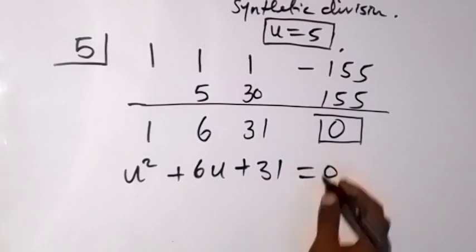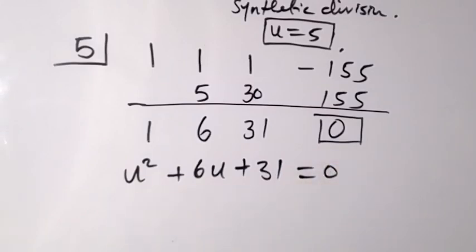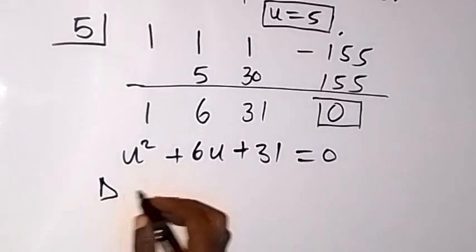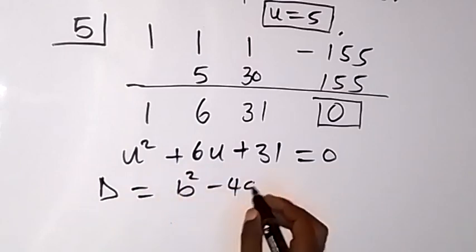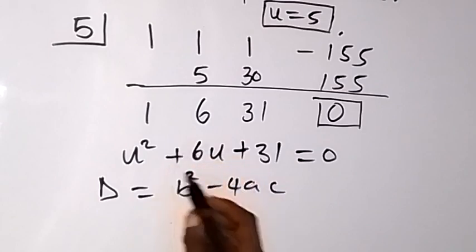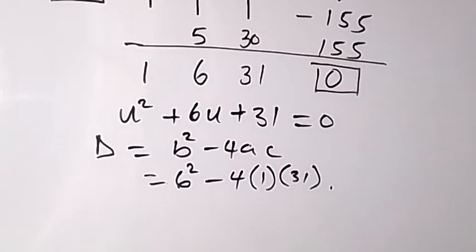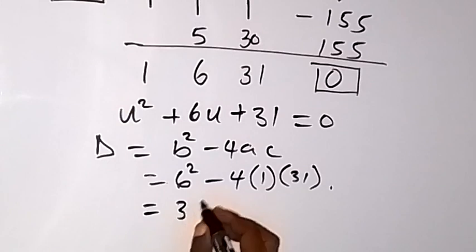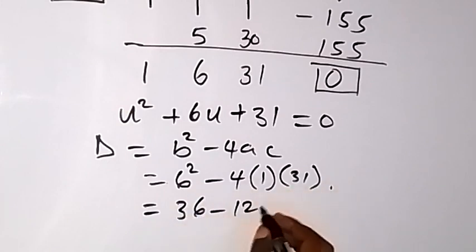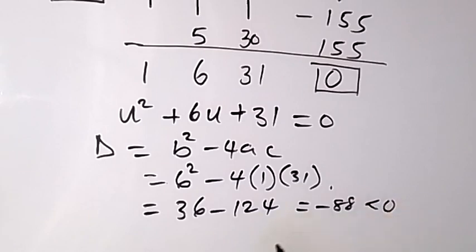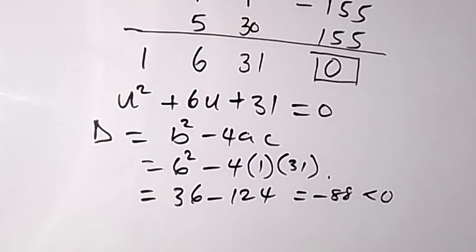Let's check whether we have a real solution or imaginary using the discriminant b squared minus 4ac. Our b here is 6, so we have 6 squared minus 4 times 1 times 31. We have 36 minus 124, which gives us minus 88. This is less than 0.